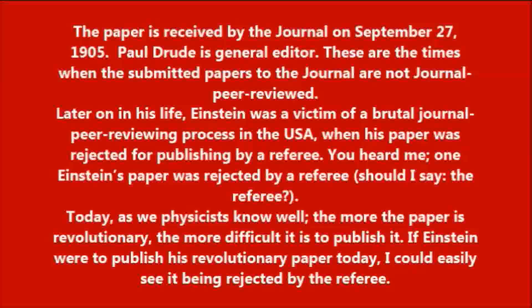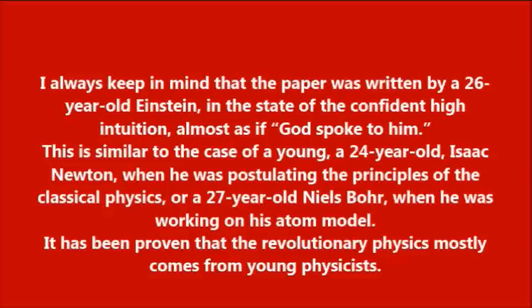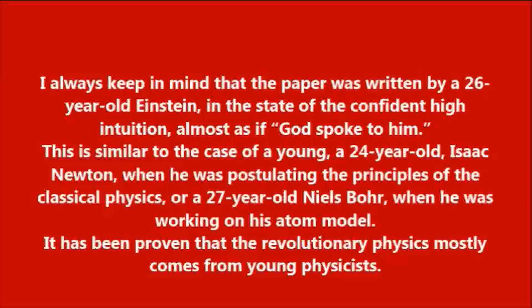You heard me — one of Einstein's papers was rejected by a referee. As we physicists know well, the more revolutionary the paper, the more difficult it is to publish it. If Einstein were to publish his revolutionary paper today, I could easily see it being rejected by a referee. I always keep in mind that the paper was written by a 26-year-old Einstein, in the state of confident high intuition, almost as if God spoke to him. This is similar to the case of a young 24-year-old Isaac Newton postulating the principles of classical physics, or a 27-year-old Niels Bohr working on his atom model. It has been proven that revolutionary physics mostly comes from young physicists.